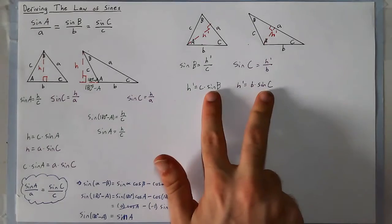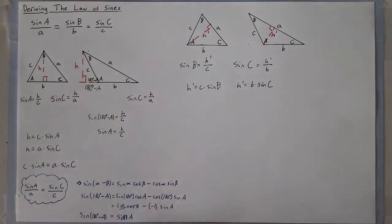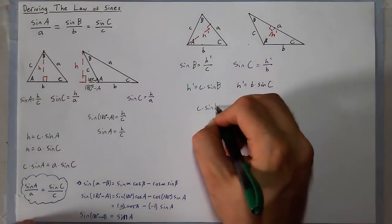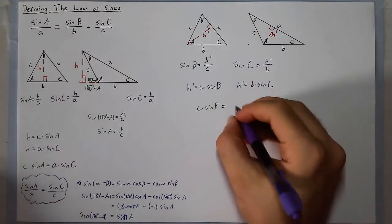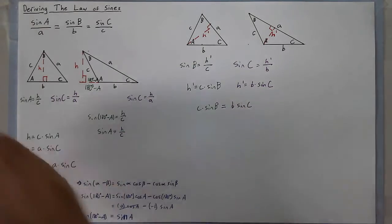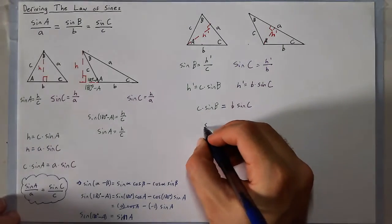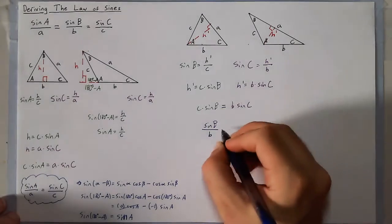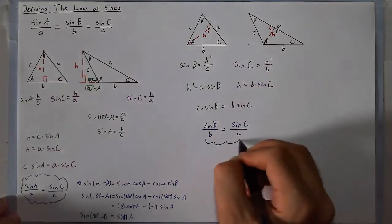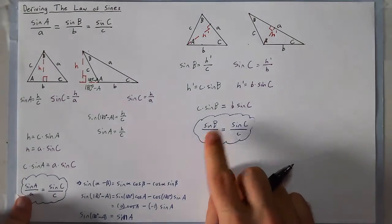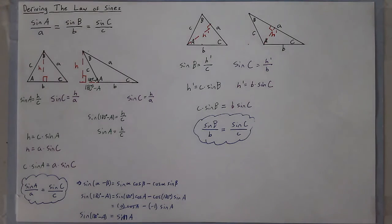Now solving each equation for H prime, I get H prime equals c times sine of B, and H prime equals b times sine of C. Setting these equal: c sine of B equals b sine of C. Dividing each side by c and by b gives sine of B over b equals sine of C over c. And although I haven't directly shown sine of A over a equals sine of B over b, by the transitive property all three ratios are equal. That is how you derive the law of sines.